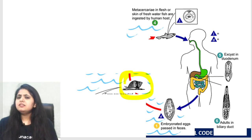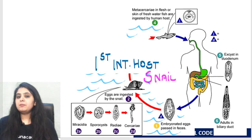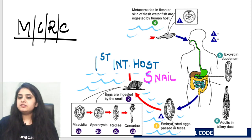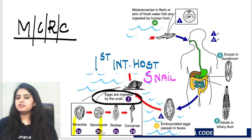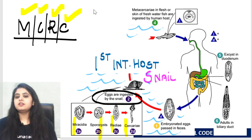In the snail, do you remember the mnemonic MCRC that we did yesterday? The same follows because we are in the same family of trematodes. This egg is ingested by the snail: M — miracidium comes out of the egg; it changes to C — cyst; changes to R — redia; changes to the C — cercaria larva. Miracidium, cyst, redia, cercaria larva — that's the MCRC development.